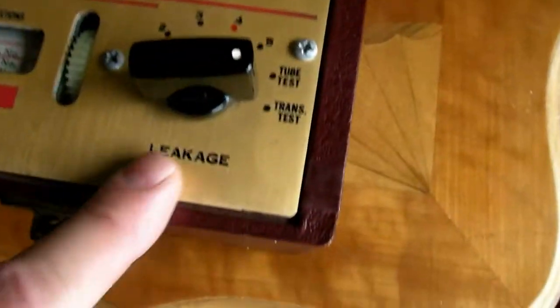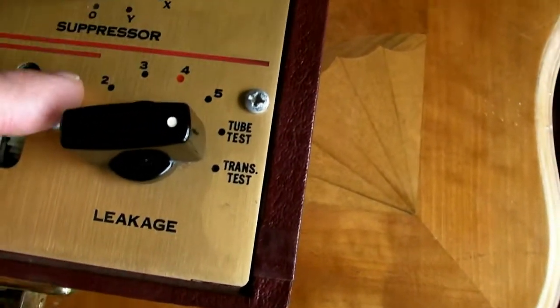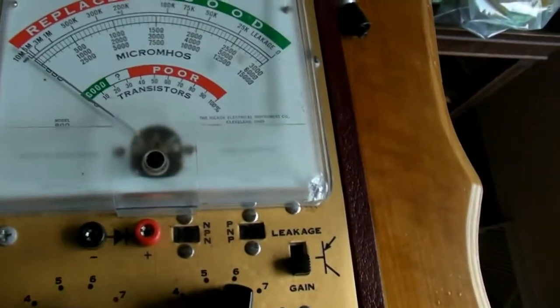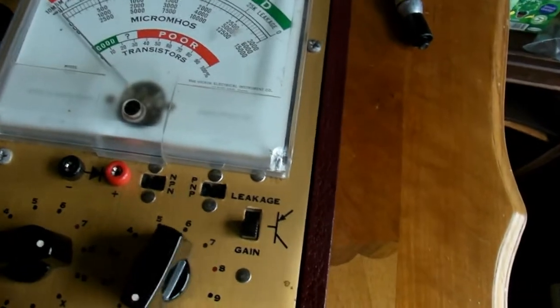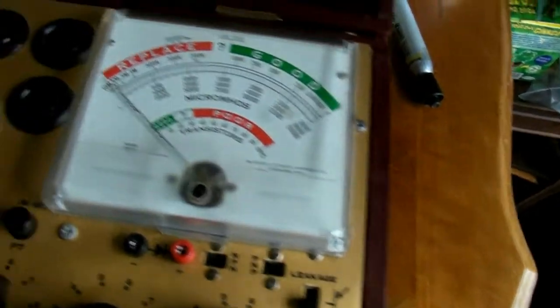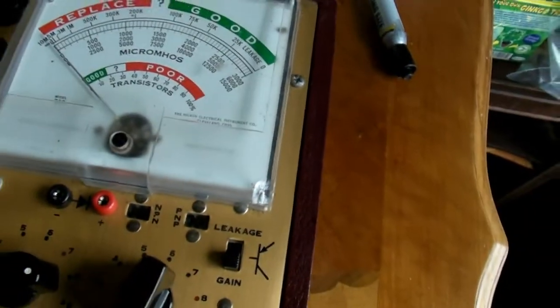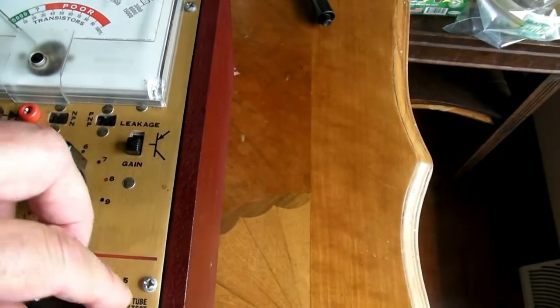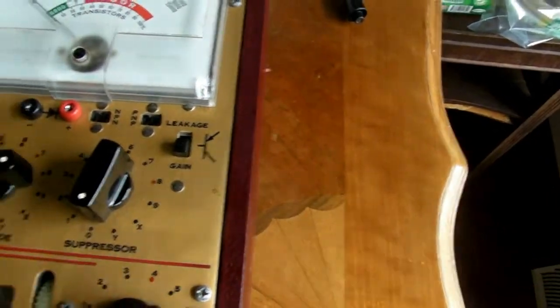So the first thing we're going to do is test for shorts. This is your leakage test right here. You go each number, watch the meter, tap the tube. And there's no shorts in that tube.